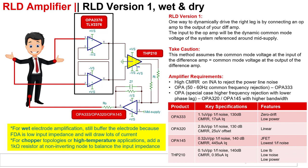If you're using a fully differential amplifier to measure the output of the electrode, you can use differential outputs to drive the right leg amplifier. The input of the op amp will be the dynamic common mode voltage of the system referenced around mid-supply. This feedback loop improves CMR by the amount equal to 1 plus A, where A is the closed loop gain of the feedback loop. The value of the closed loop gain depends on the values of the feedback impedance and difference amp output common mode sensing resistor. An excellent choice for an amplifier in the right leg drive is the OPA-333 zero drift amplifier.